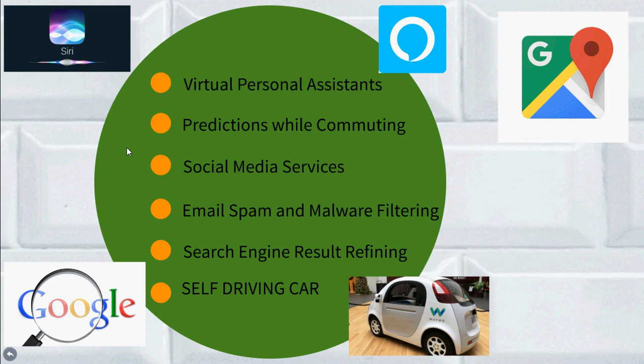Let's see how machine learning has been used in predictions while commuting. We all have been using GPS navigation services. Our current location and velocity are saved at a central server. This data is then used to build a map of current traffic. Machine learning in such scenarios helps to estimate the regions where congestion can be found on the basis of daily experiences.